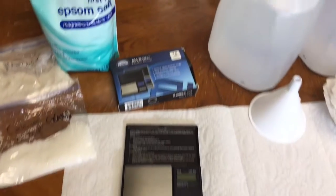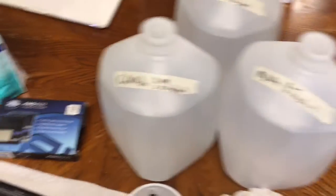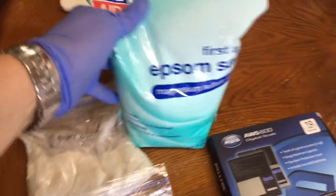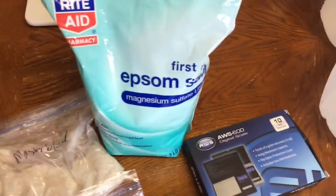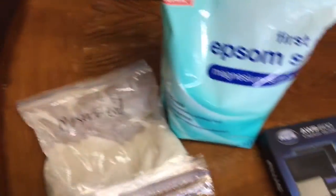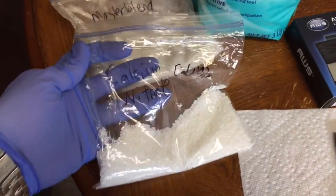I'm going to show how I'm going to mix my master blend stuff. So what I've got: Epsom salt, which is the magnesium sulfate, master blend formula, and calcium nitrate.